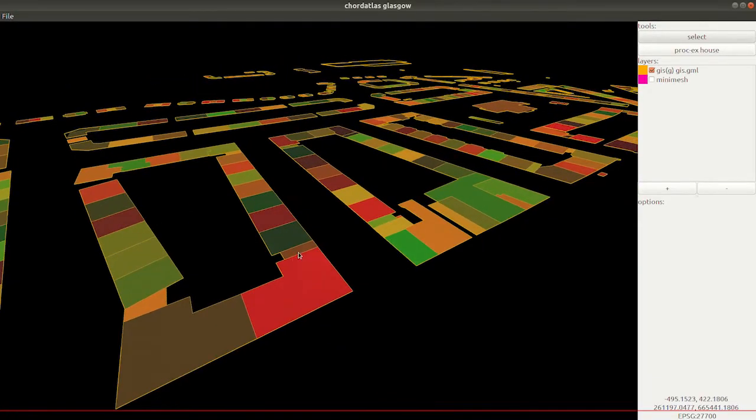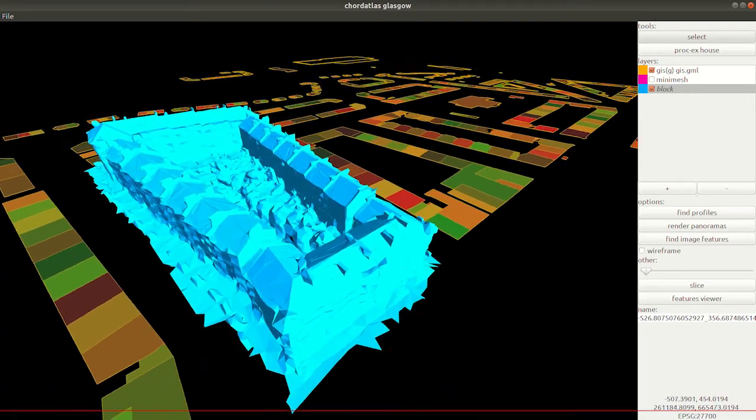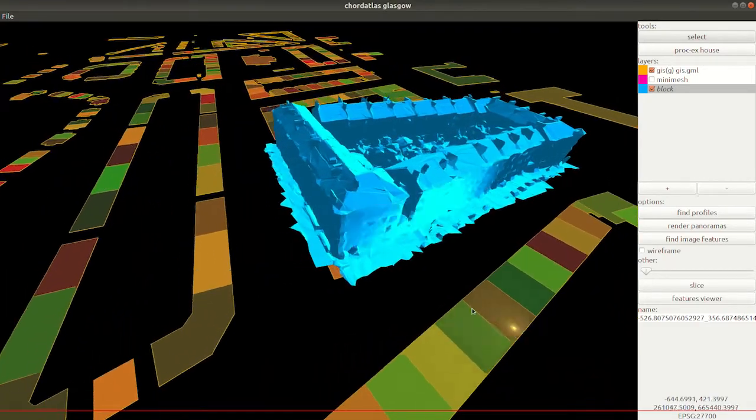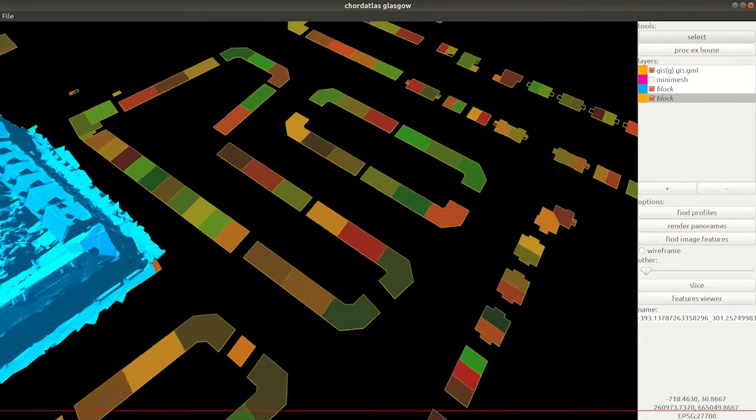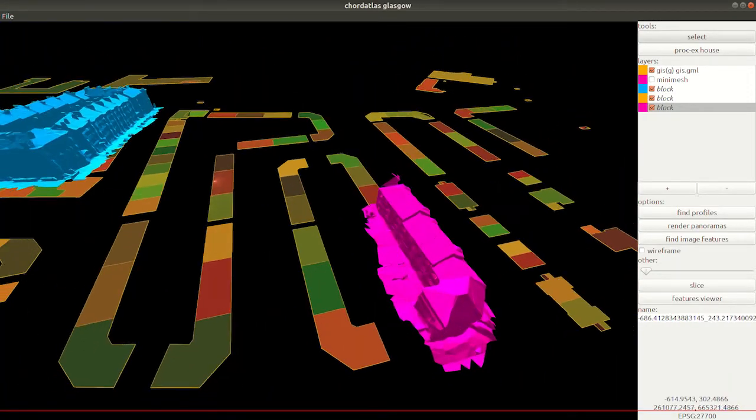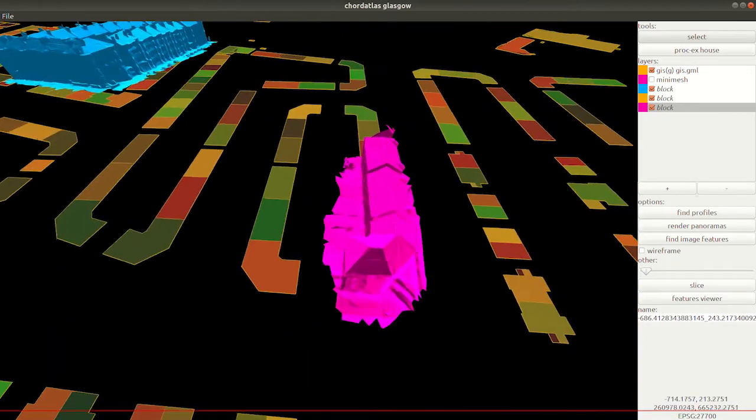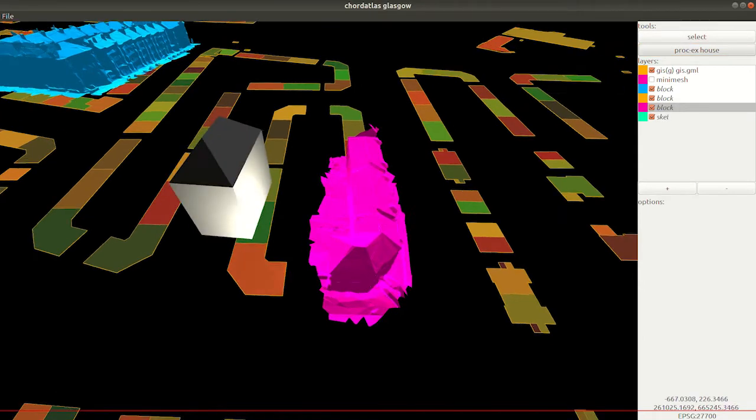Let us introduce now our urban data fusion platform called Chord Atlas. We can see here GIS footprints on the ground and as we rotate the camera around, we can right-click and select a block to import the photogrammetric meshes. Here we see one particular mesh in pink.